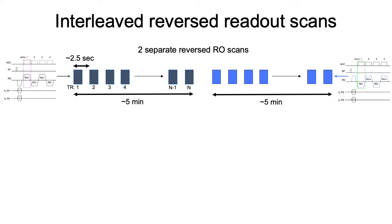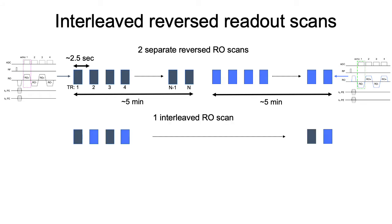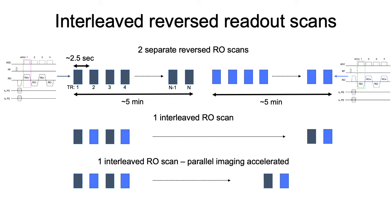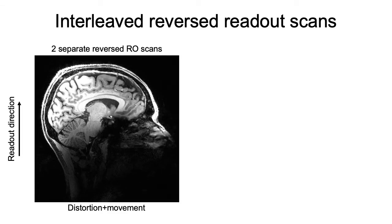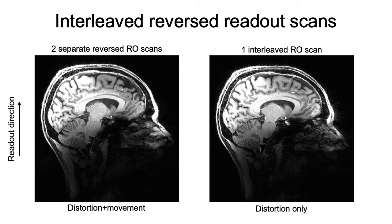We do this in two separate reverse readout scans, or we can acquire one scan with interleaved readout polarity and accelerate that with parallel imaging. In general there will be some movement between two separate scans, making it hard to visualize the distortion between the two reverse polarity acquisitions because of head movement. In the interleaved readout scan you can clearly see the distortion only, without the movement confound.